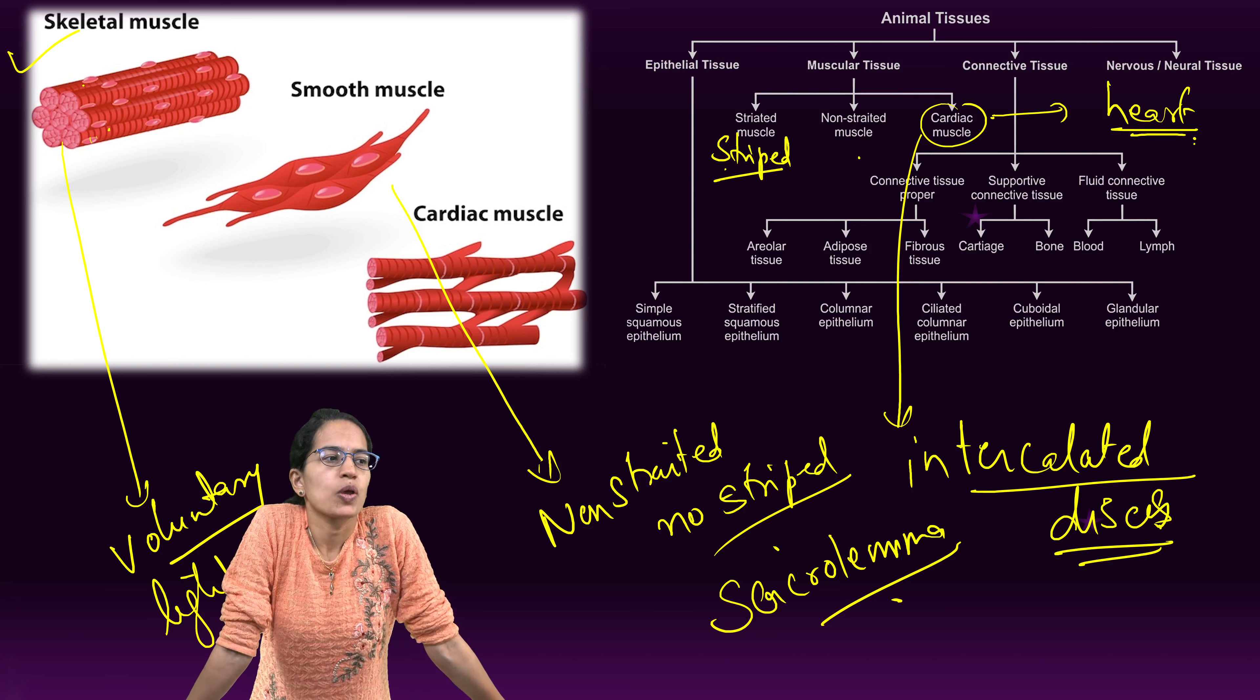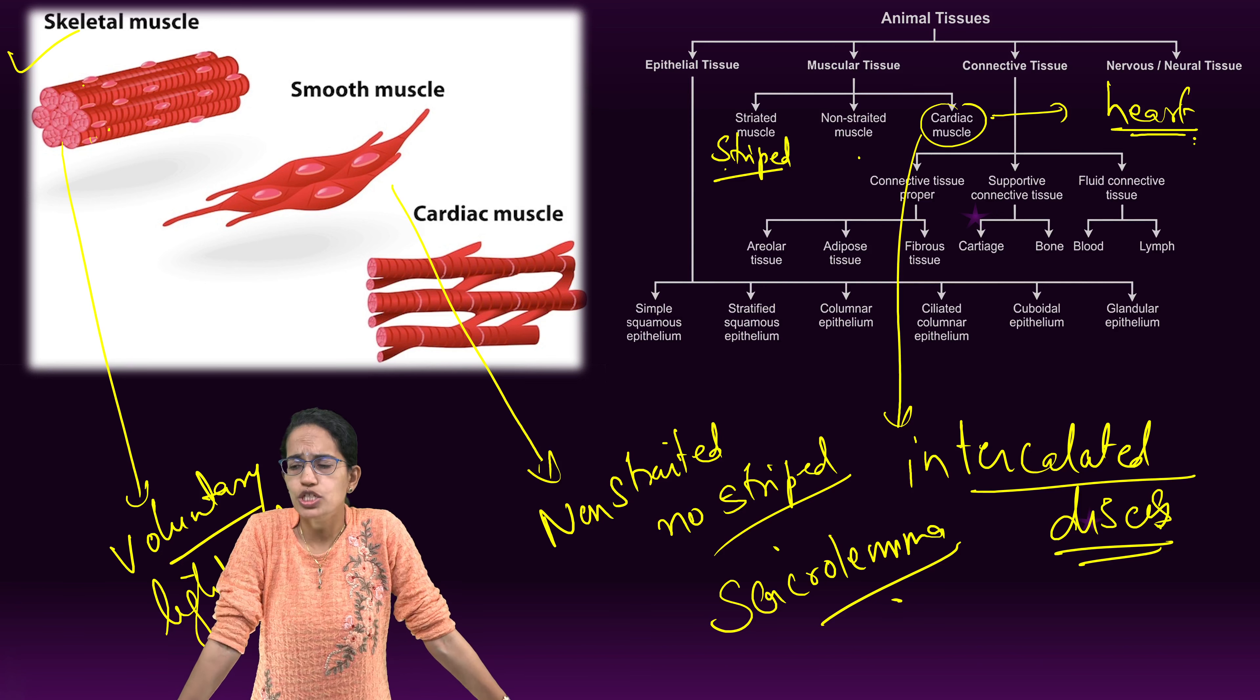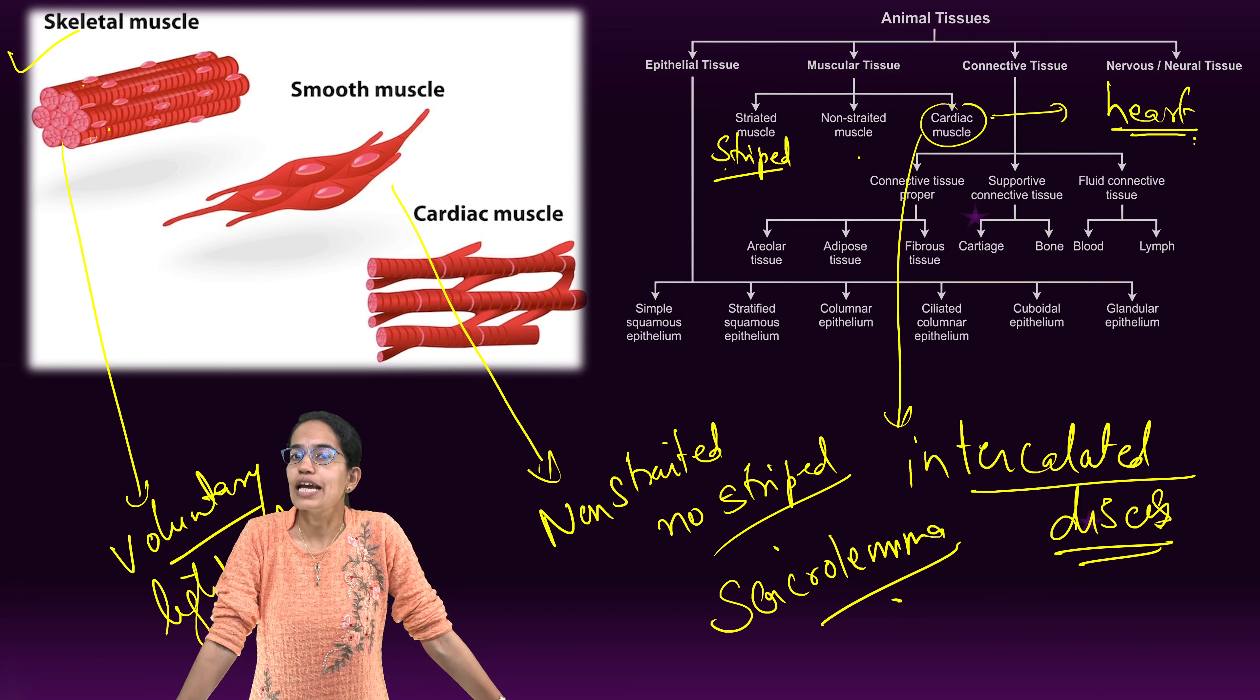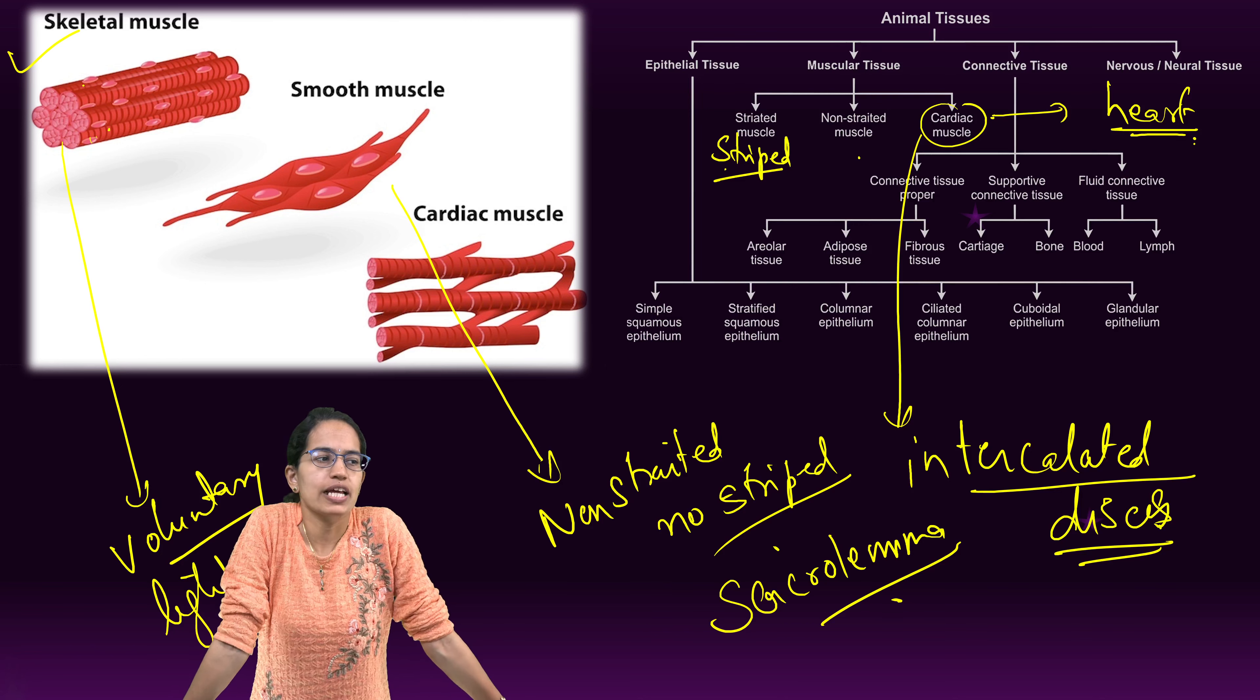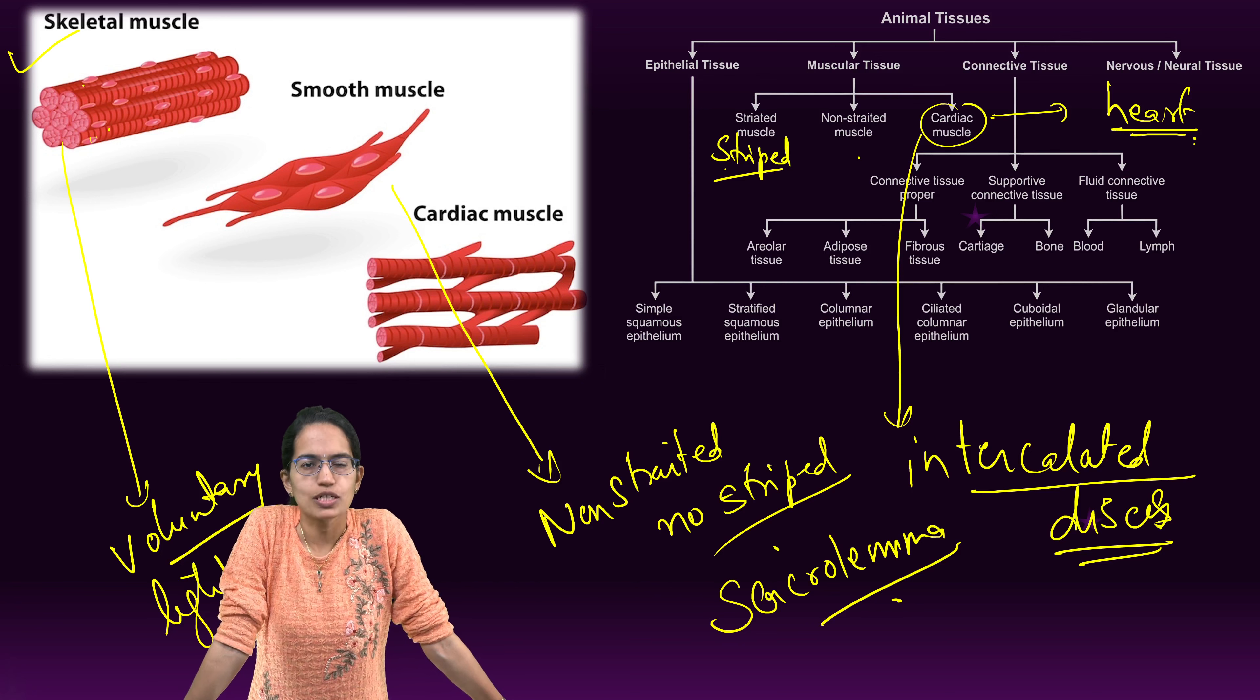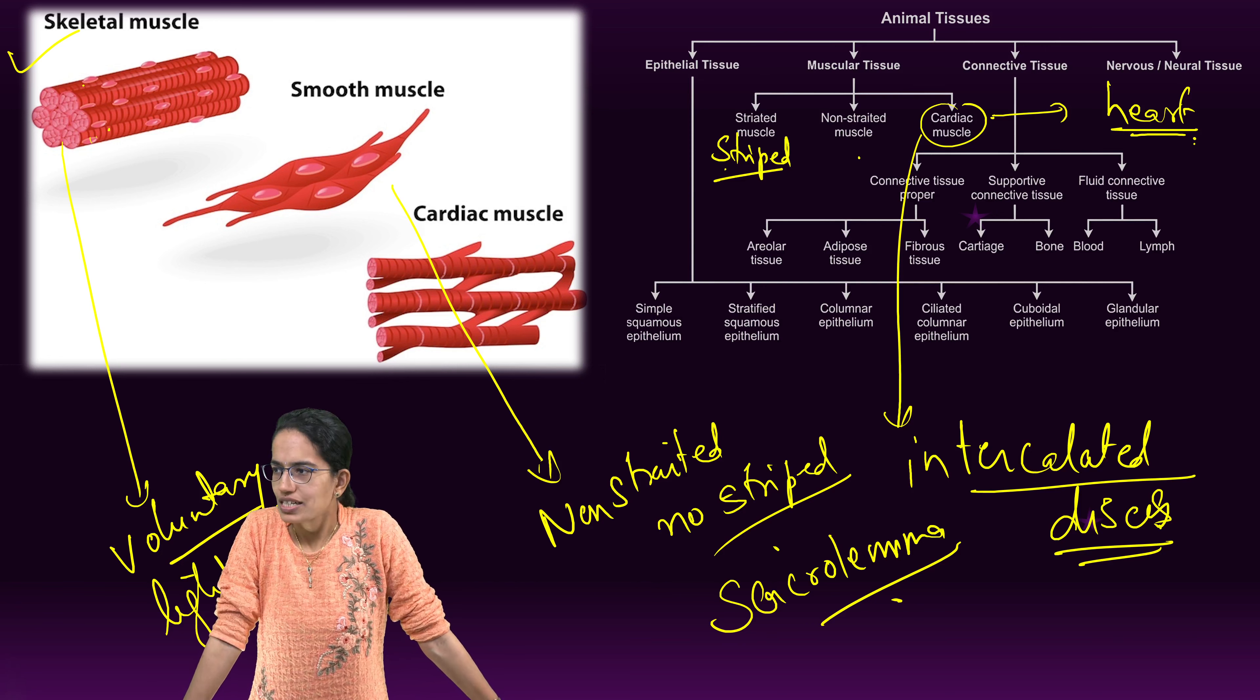Striated muscles, or skeletal muscles, help in locomotion and movement, and also get fatigued. Another interesting example of skeletal muscle is the tongue muscle. If I want to speak, I'll use it. Otherwise, I don't. That is an example of skeletal muscle.